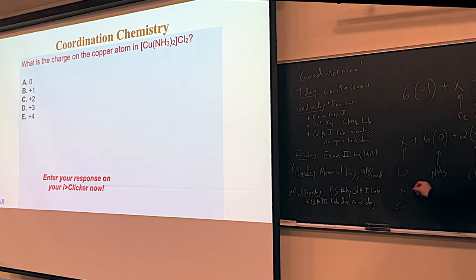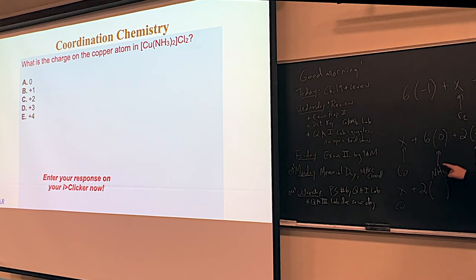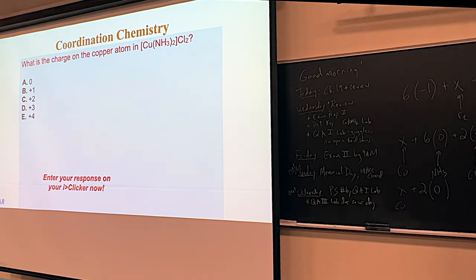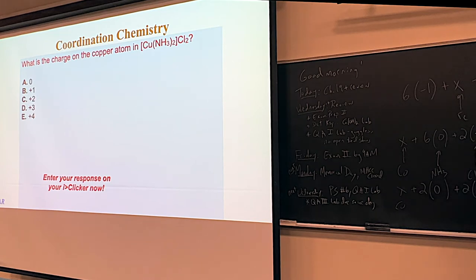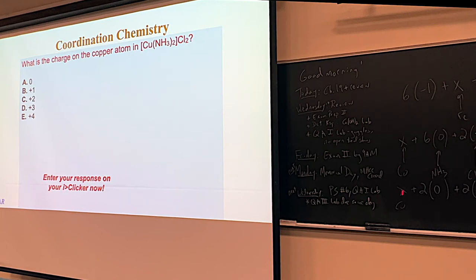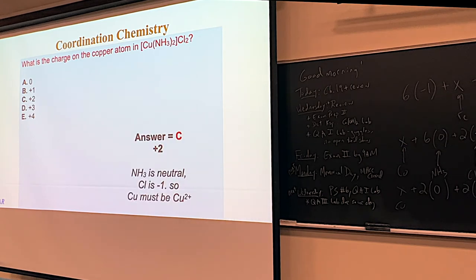X for the copper, plus two ammonias at zero, plus two chlorides at negative one — does this beast have an overall charge? No. So you let this equal to zero. X plus zero minus two equals zero, so you solve for x: positive two.